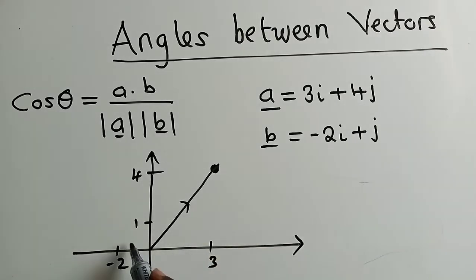And then, for vector B, it is negative 2, 1. It's right here. This is the vector we are talking about. Now, how can we find the angle in between this angle?